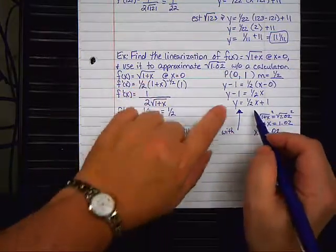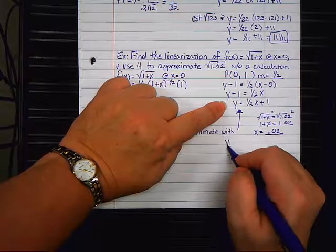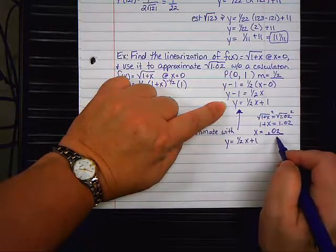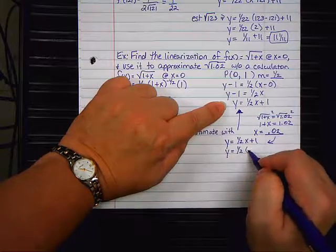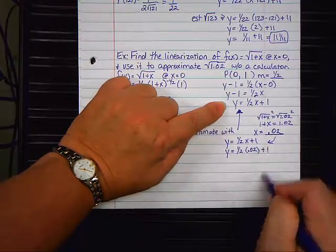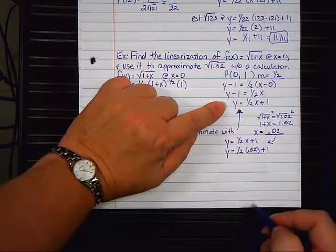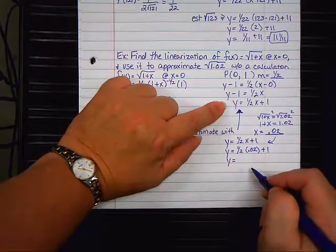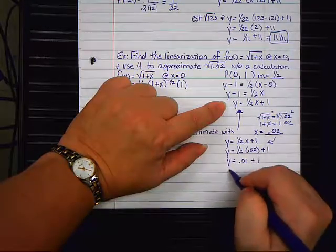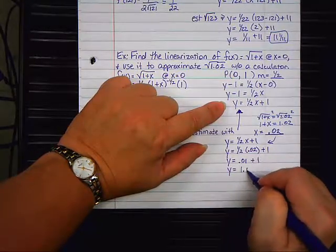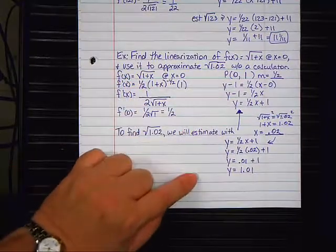Now take your line. Y equals 1 half X plus 1 and plug in the .02. Y equals 1 half .02 plus 1. What is half of 0.02? 0.01 plus 1 and so you get Y equals 1.01.